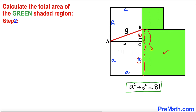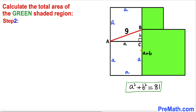Now let's focus on the large green square. We know that this length is A and this length is B, so therefore this total length is going to be A plus B. And since this square has all equal sides, each side length is going to be A plus B.